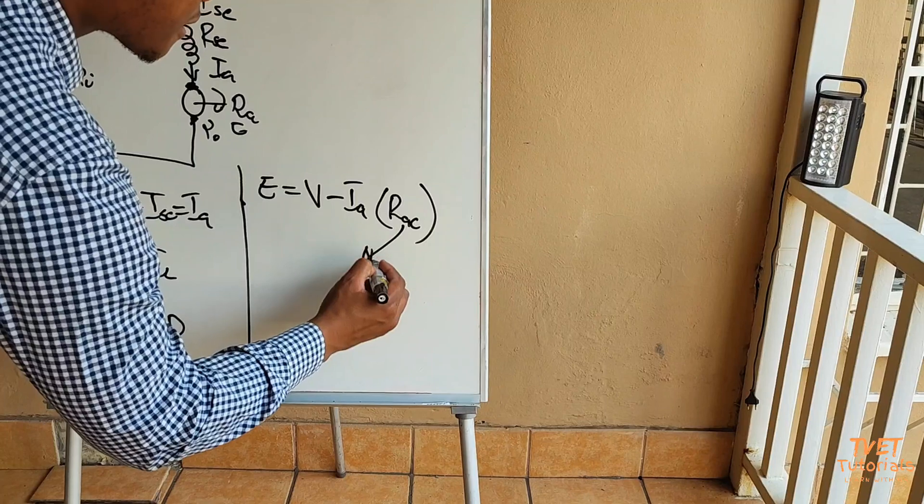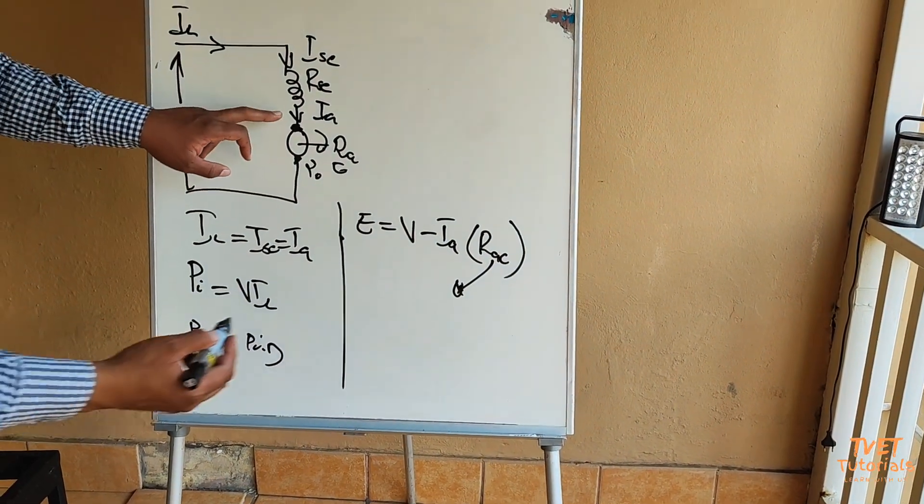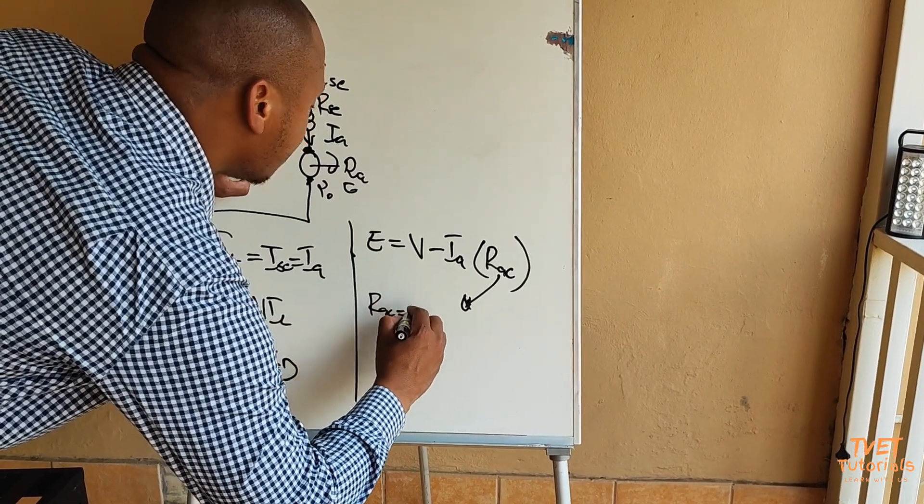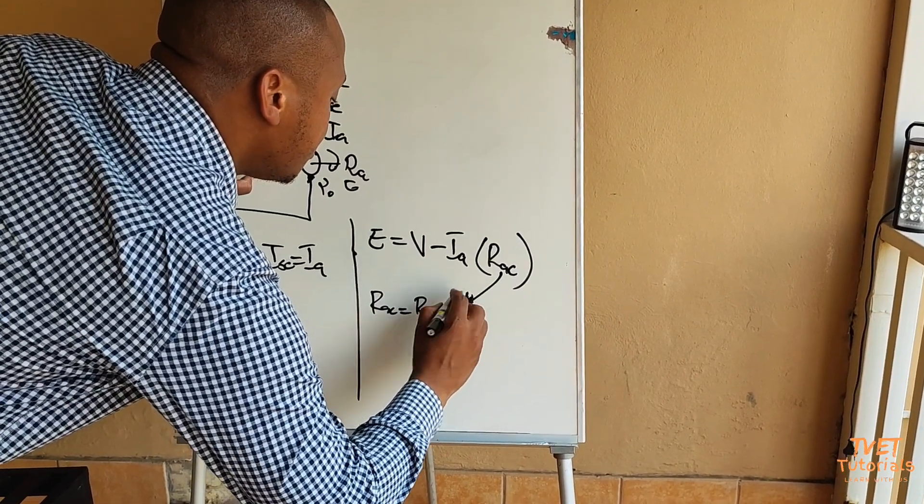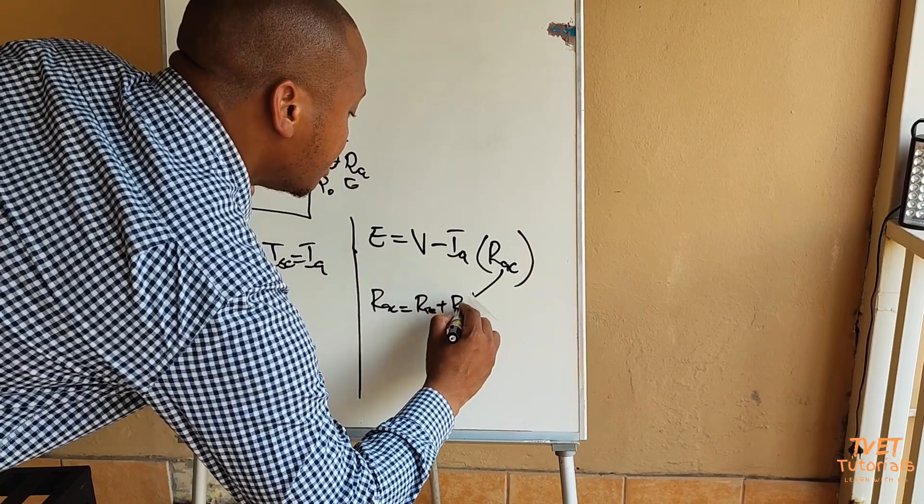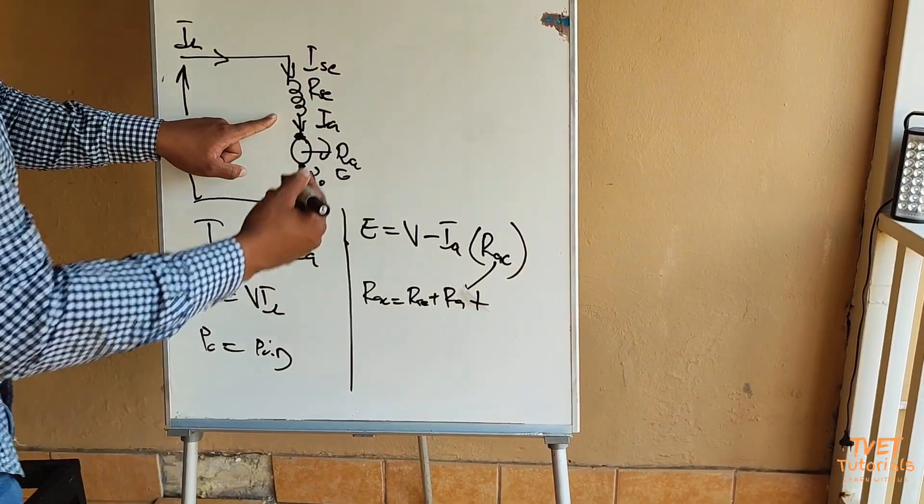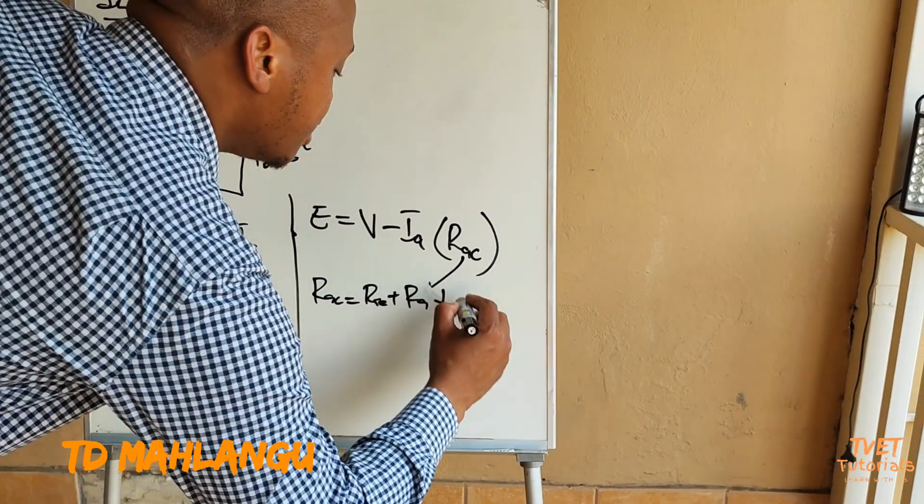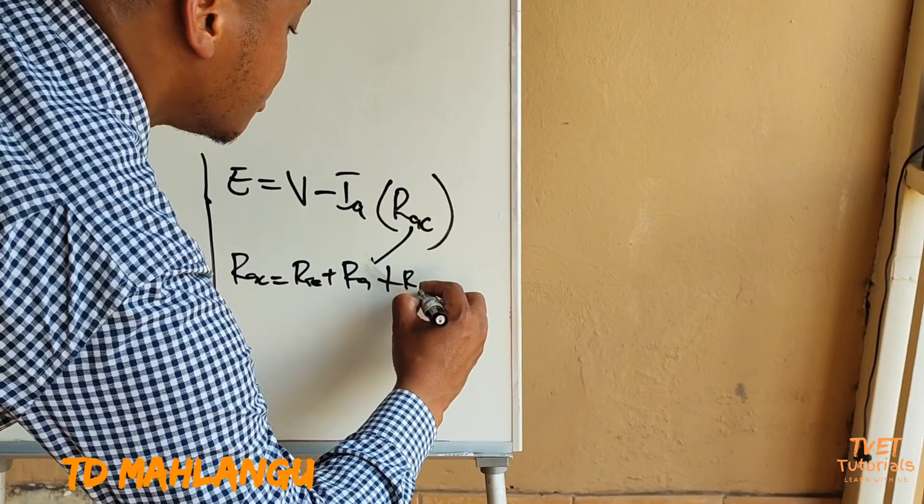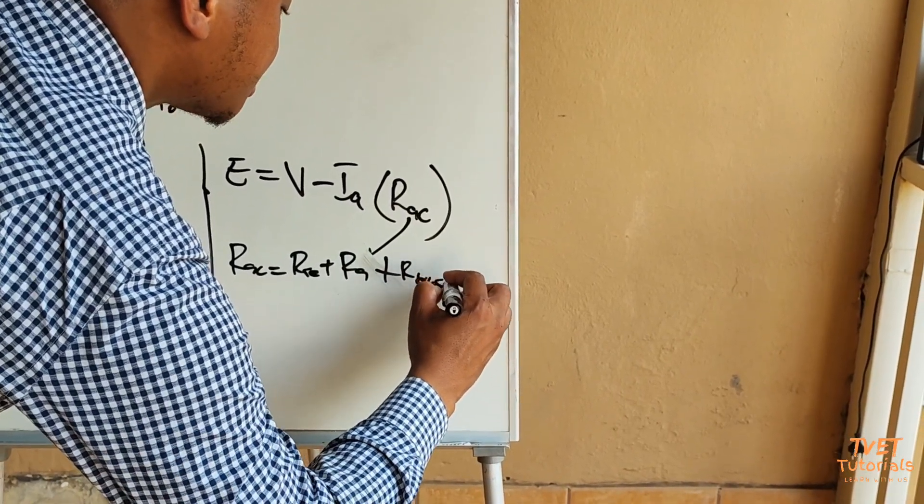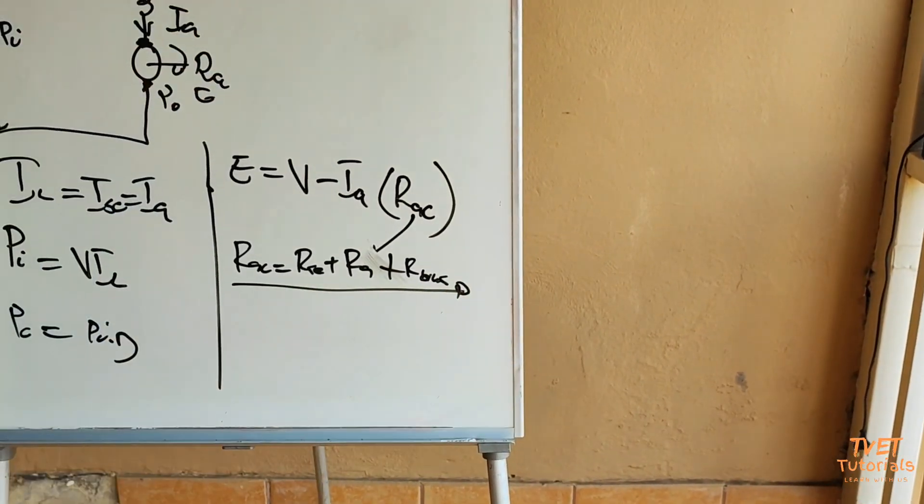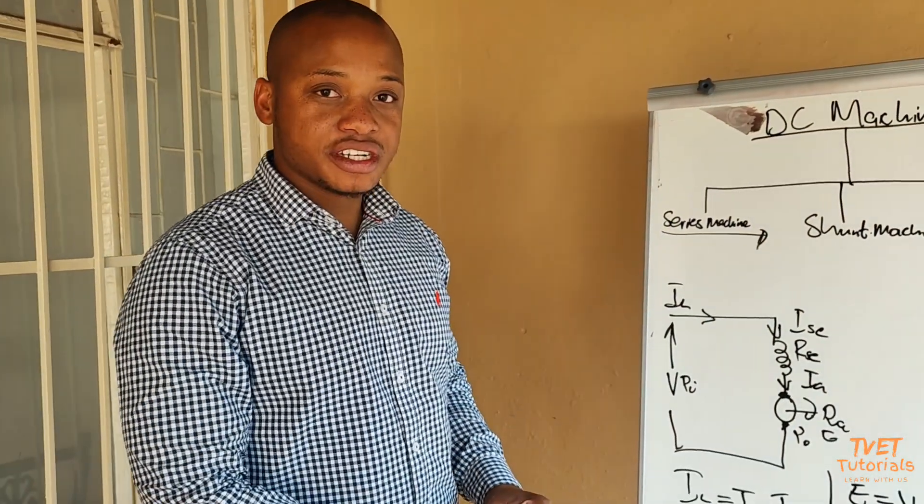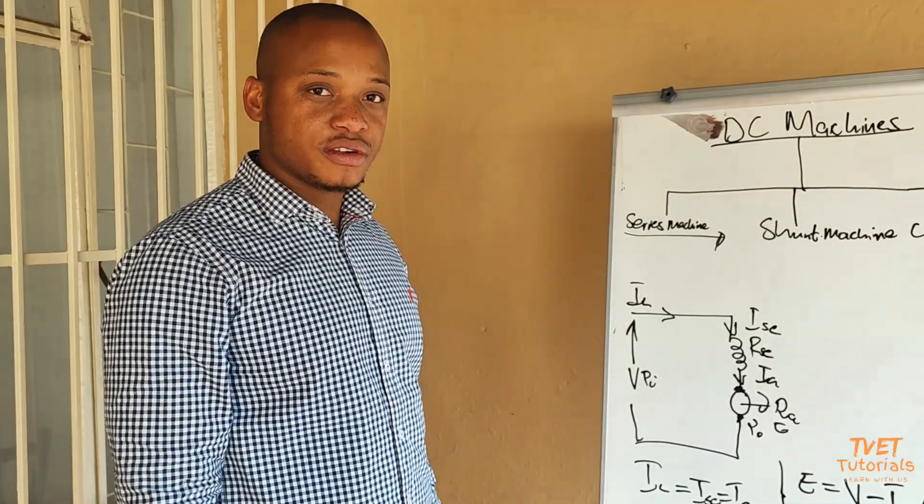RAC can include a lot of values. For example, RAC is inclusive of RSE plus RA, plus should there be brushes or brush information in the machine, then you will have your R brush.